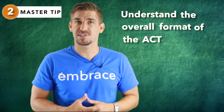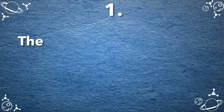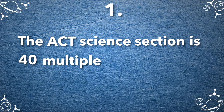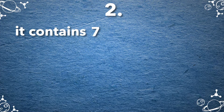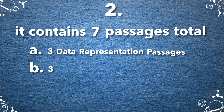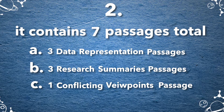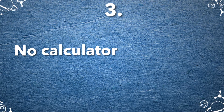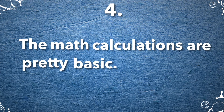Master Tip number two: understand the overall format of the ACT Science section to anticipate the questions asked. The immediate need-to-knows: one, the ACT Science section is 40 multiple choice questions in 35 minutes; two, it contains seven passages total — three data representation passages, three research summaries passages, and one conflicting viewpoints passage; three, no calculators provided; and four, the math calculations are pretty basic.